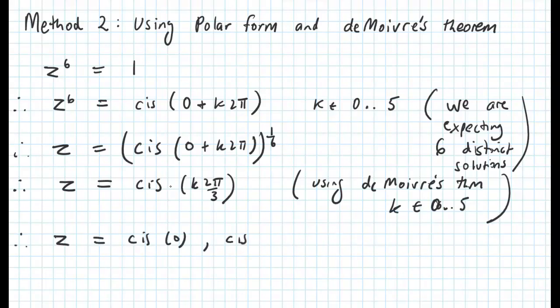If we enumerate all those six solutions, we get cis 0, cis pi on 3, etc., up to cis 5 pi on 3.